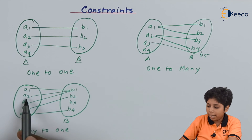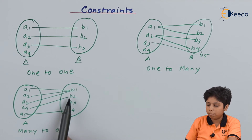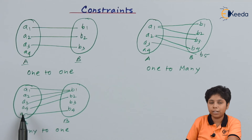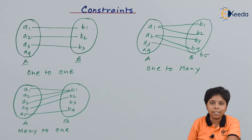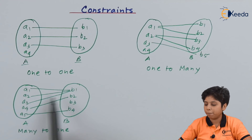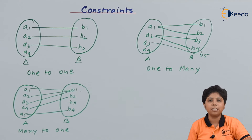In many-to-one mapping, a1, a2, and a3 are all mapped with attribute b1 in entity B, and a4 is mapped with b2, and a5 with b4. It is not mandatory that every mapping has more than one attribute going to one, but to define many-to-one there must exist at least one instance where more than one attributes are mapped to one attribute of the right relation.